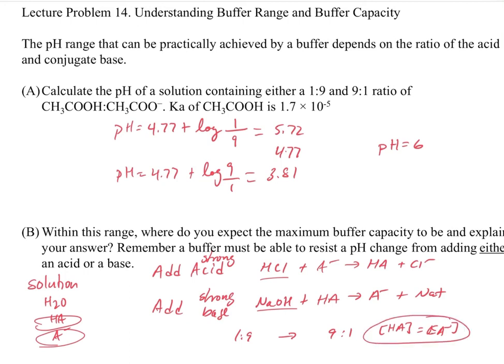So the answer to this question is our best, our maximum buffer capacity is when HA is equal to A minus. And of course,